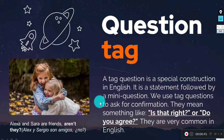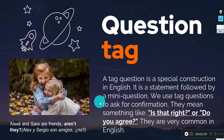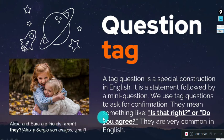En español, estas se conocen como las famosas 'preguntas coletilla'. Básicamente son para confirmar información y no tienen una traducción exacta — no significan exactamente 'sí', 'no', u otro tipo de respuesta. Son simplemente preguntas para confirmar. Por ejemplo: 'Alexa y Sara son amigas, ¿no?' — 'aren't they?' is the question tag. Let's continue.